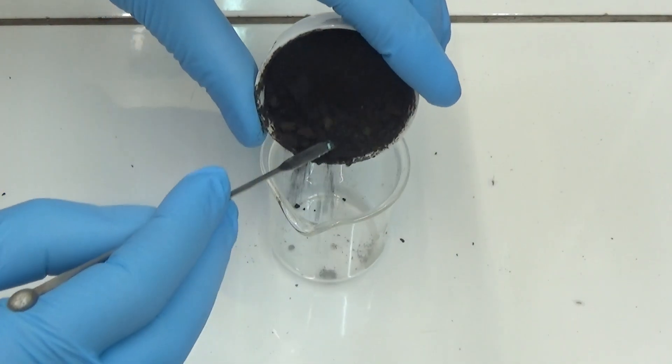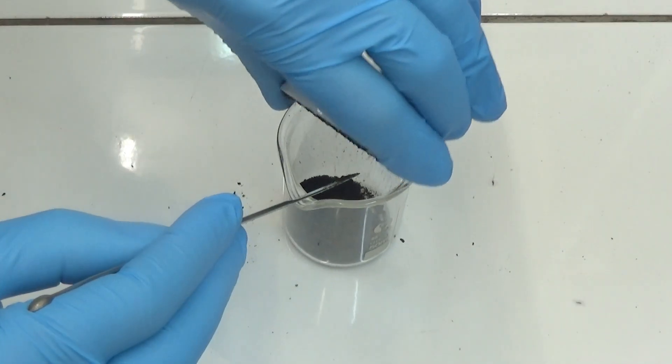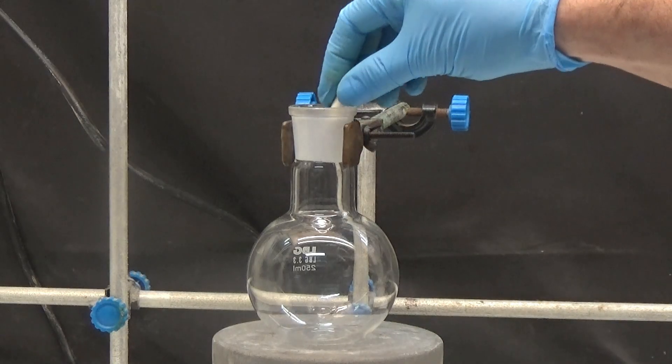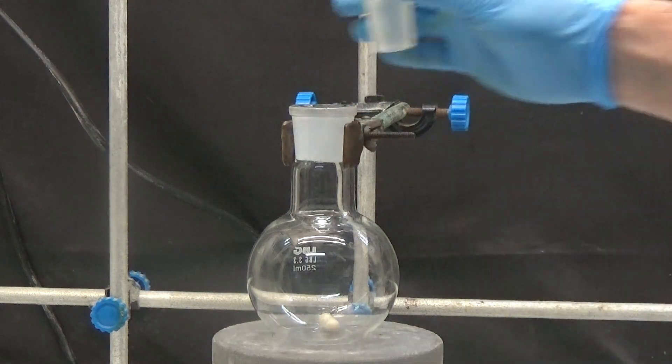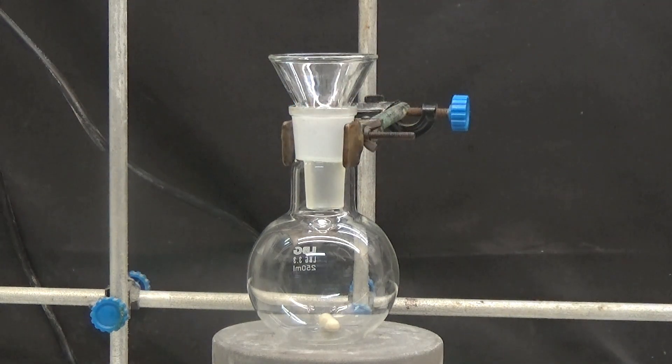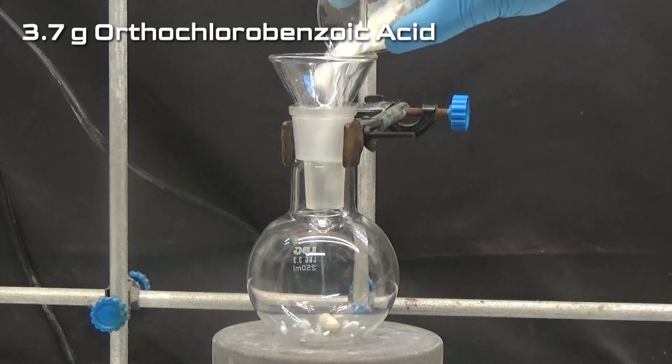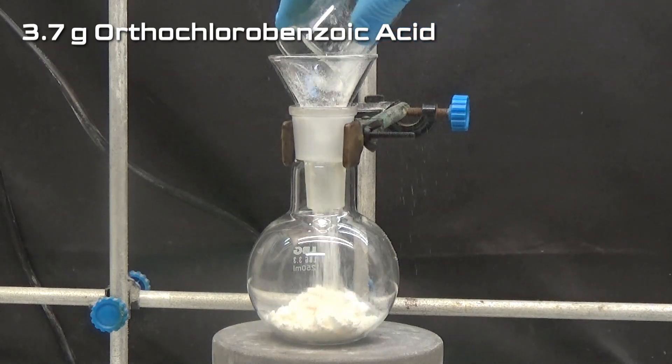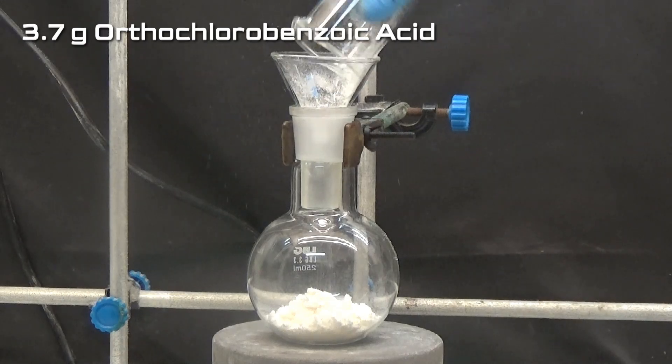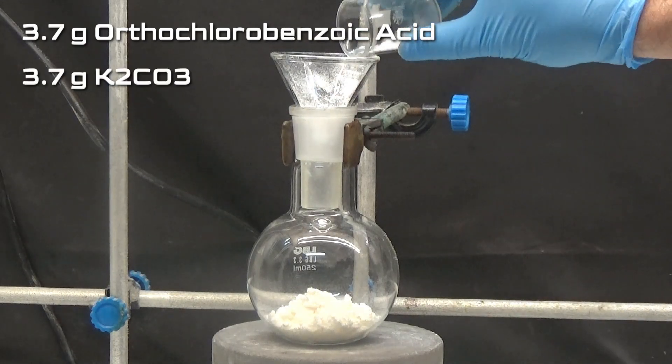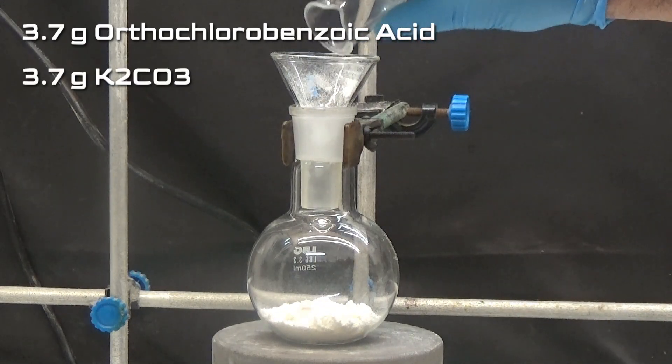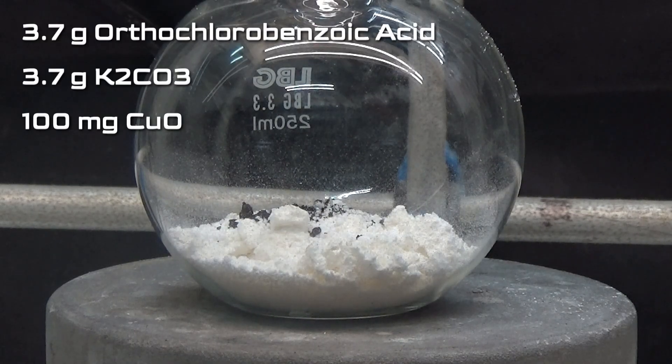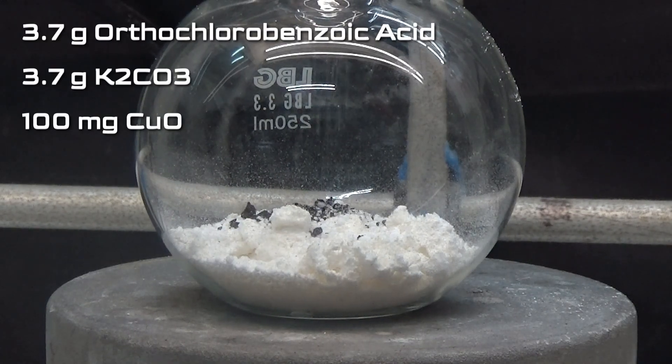We reserve the obtained product for the following reaction. To obtain the phenylanthranilic acid with the Ullman reaction, we are going to put in a flask of 250 milliliters: 3.7 grams of orthochlorobenzoic acid, 3.7 grams of anhydrous potassium carbonate, 100 milligrams of copper oxide, and 14 grams of aniline.